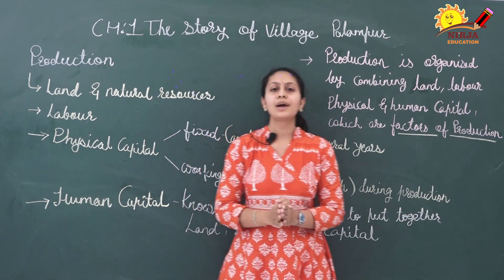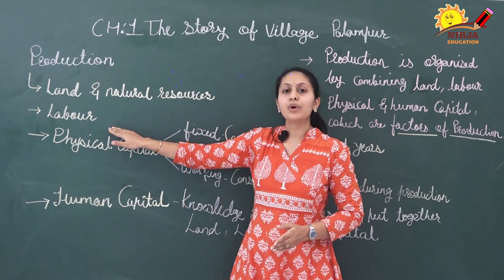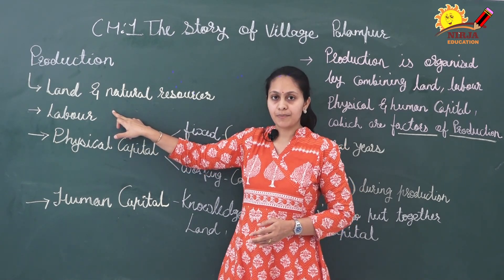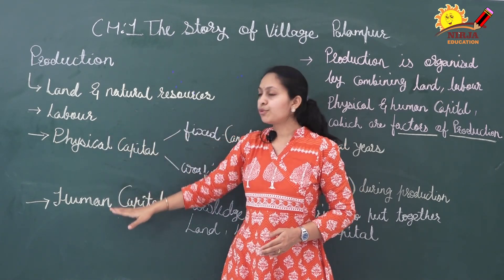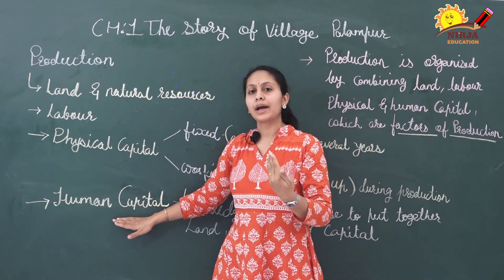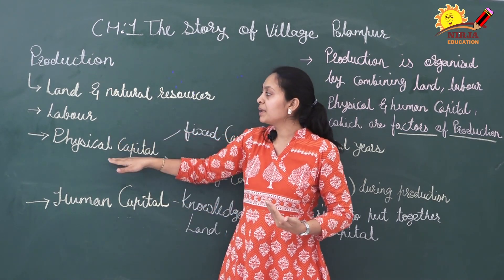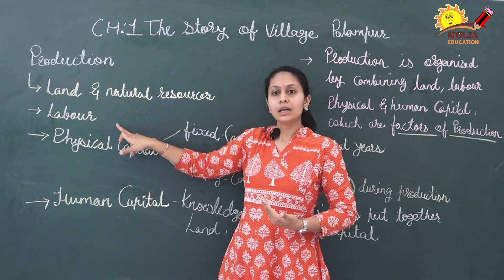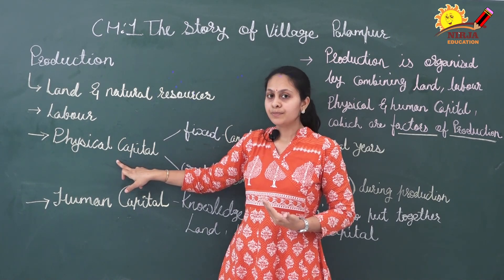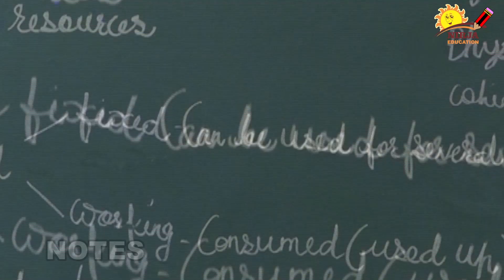In this chapter, we are going to understand each factor one by one. The fourth factor — human capital — has been left for your next chapter. In this chapter we will be understanding the first three: land, labour, and physical capital. So let us understand land.